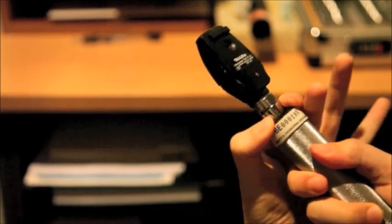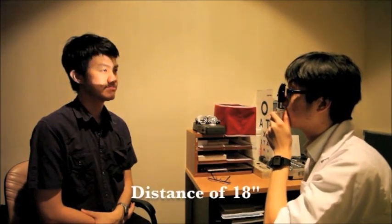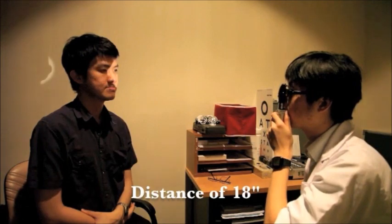Turn on the ophthalmoscope and set the lens power to zero. Look through the aperture and shine the light onto the patient's eyes. Examine the red reflex from both eyes simultaneously and then from each eye separately. Note that this test has to be conducted at a distance of 18 inches.